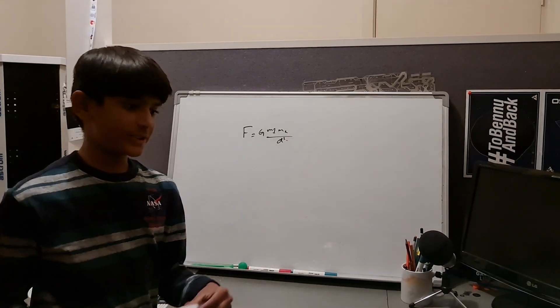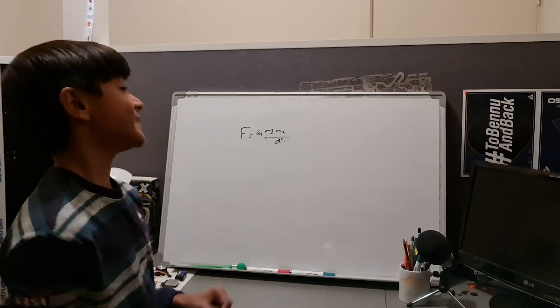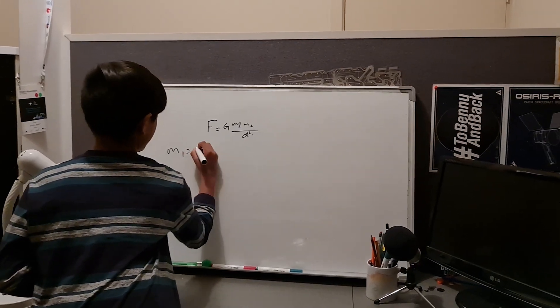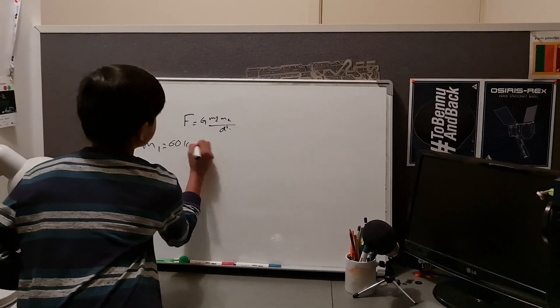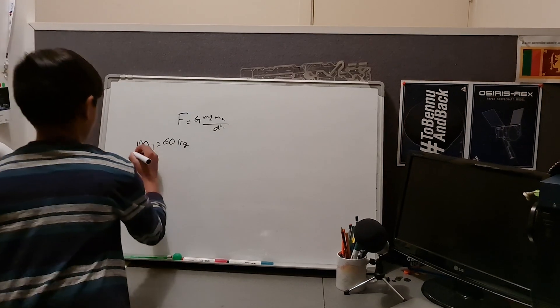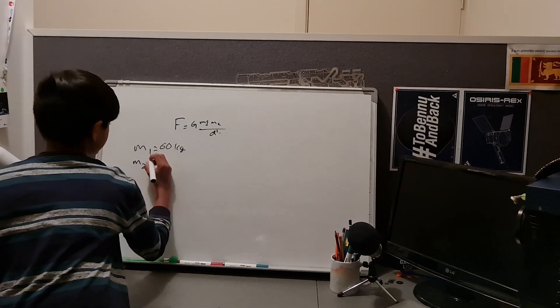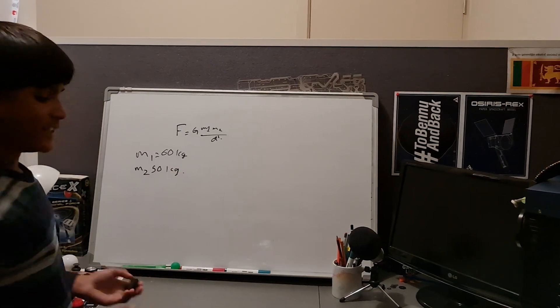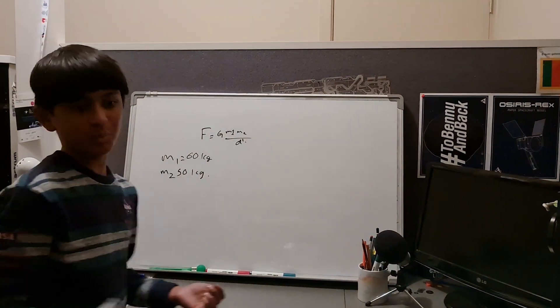Let's just say we have two objects. Let's say 60 kilograms. Let's say we have object one equals 60 kilograms, and object two could be 50 kilograms. If you have the distance between them, let's say it's about one meter, because one's an easy number to use.